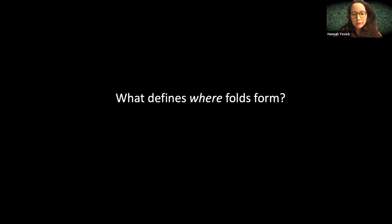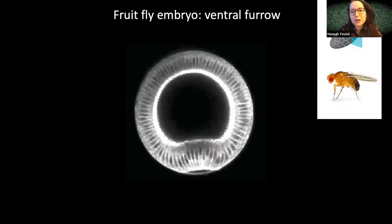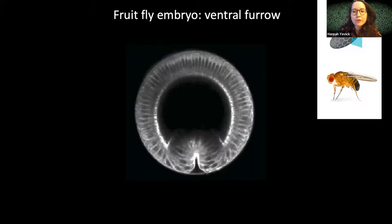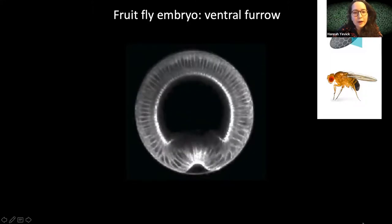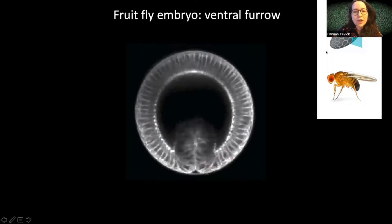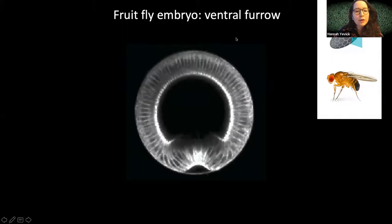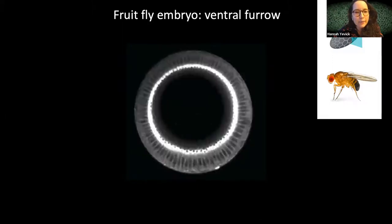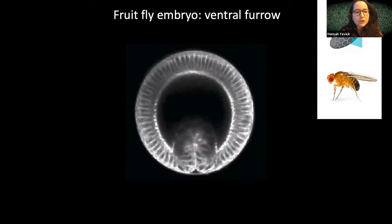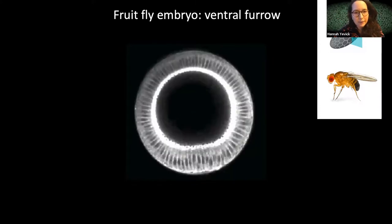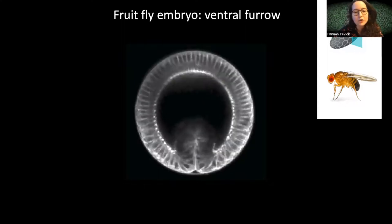I'll show you an example answering this question using the early fruit fly embryo. The early fruit fly embryo is a football-shaped embryo, and here we're looking at a cross section of this football showing a single epithelial sheet surrounding a central yolk. So what determines which side of this embryo is going to go on and form this initial fold?